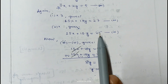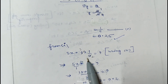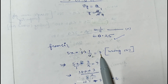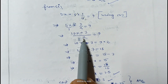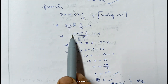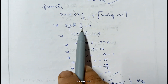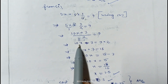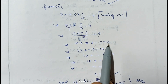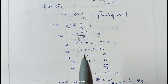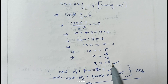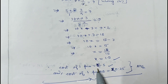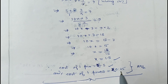Replacing y equals 1 by 4 in equation 1: 5x plus 6 into 1 by 4 equals 9, so 5x plus 3 by 2 equals 9. Taking LCM 2: 10x plus 3 equals 18, so 10x equals 18 minus 3, giving 10x equals 15, therefore x equals 15 by 10, which is 1.5. Therefore cost of 1 pen is Rs. 1.5 and cost of 1 pencil is Rs. 0.25.